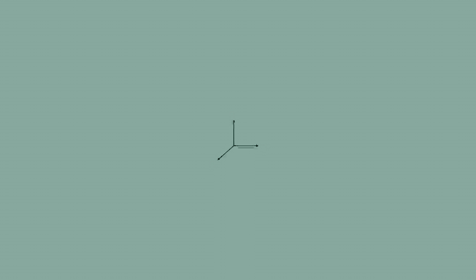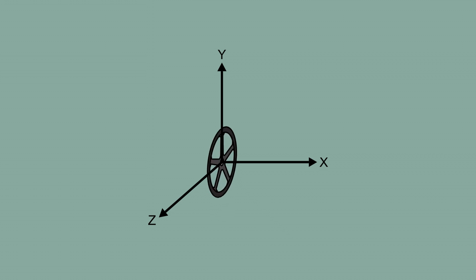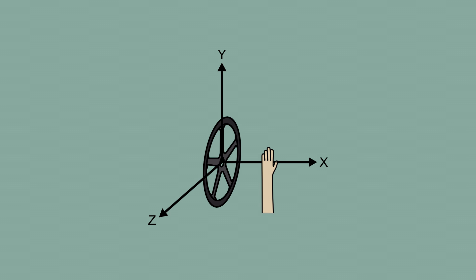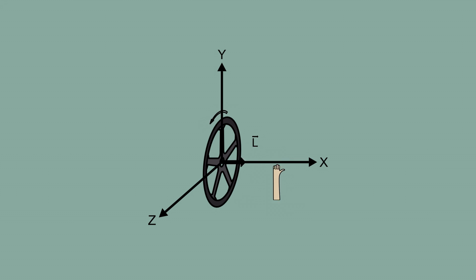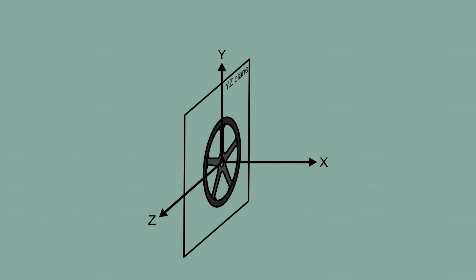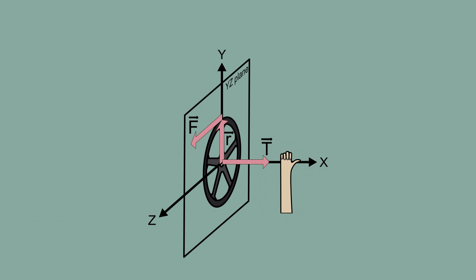Torque and angular momentum are both vector quantities, meaning they have both direction and magnitude. The direction of angular momentum is determined by your right hand: when you curl your fingers in the direction of rotation, your thumb gives the direction of angular momentum. The direction of torque is perpendicular to both the r and f vectors, also determined by the right-hand rule — place your fingers in the direction of radius, swirl toward the direction of force, and your thumb gives the direction of the torque vector.